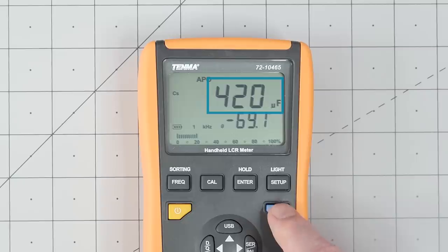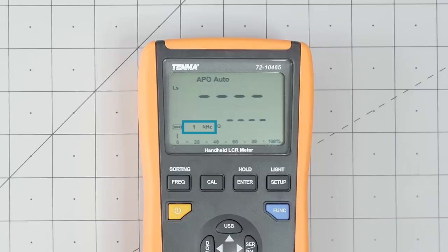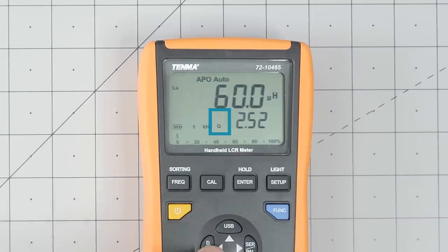The large numbers show the primary measurement. To its left is the mode. This meter supports capacitance, resistance, DC resistance, which causes the meter to work like the resistance mode on a regular DMM, and finally inductance. Below that area is an indicator for the frequency, which right now is 1kHz. And to the right of that is a secondary measurement area with its own mode indicator. That display can show quality factor, ESR, phase angle, and dissipation factor.